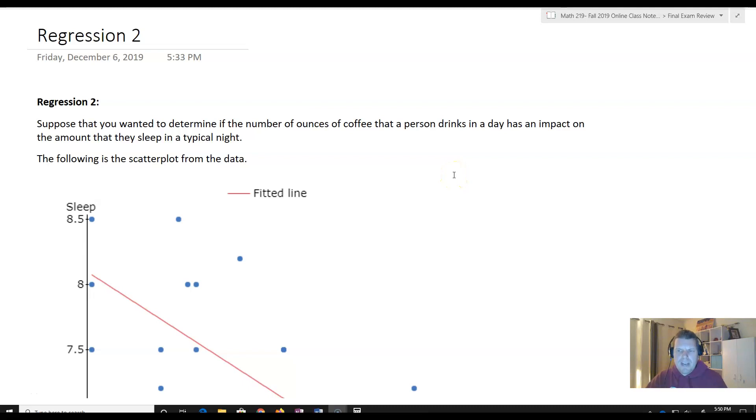All right. So this is our second regression recording or second regression question. Suppose that you wanted to determine if the number of ounces that a person drinks in a day has an impact on the amount that they sleep in a typical night. So does coffee impact the amount that somebody sleeps?